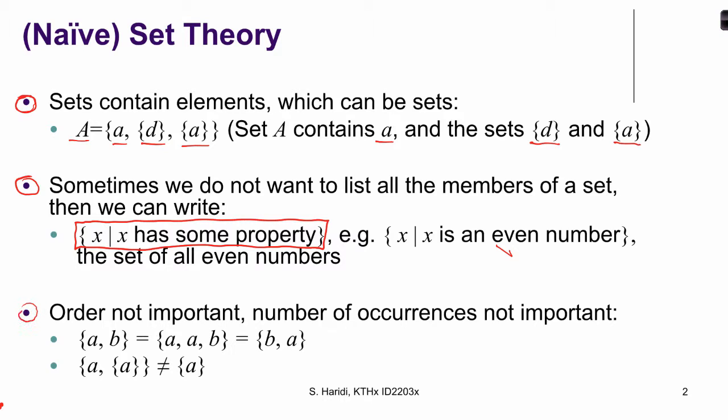Two things are important about sets. Order is not important, so for example the set AB is in fact equal to the set BA. And the number of occurrences is not important. So the set AB is actually the same set as A, A, and B. On the other hand, an element A is not the singleton set A. Therefore the set of A and the singleton set A is not equal to the set that contains only the element A.